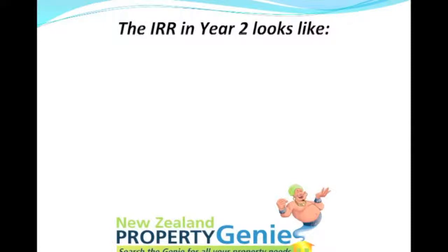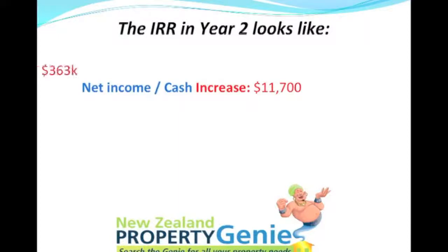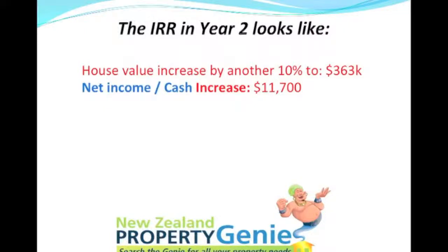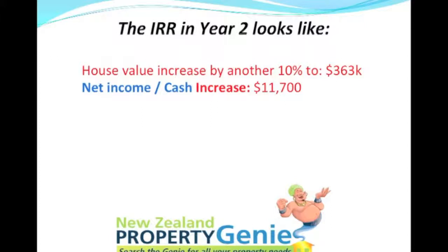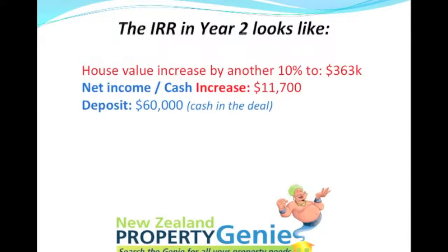Now let's see how the IRR in year two looks. Net income cash increases with inflation, so let's say it's risen to $11,700. The house value increased by another 10%, from $330,000 to $363,000. So we're taking $363,000 and the increased cash flow of $11,700.